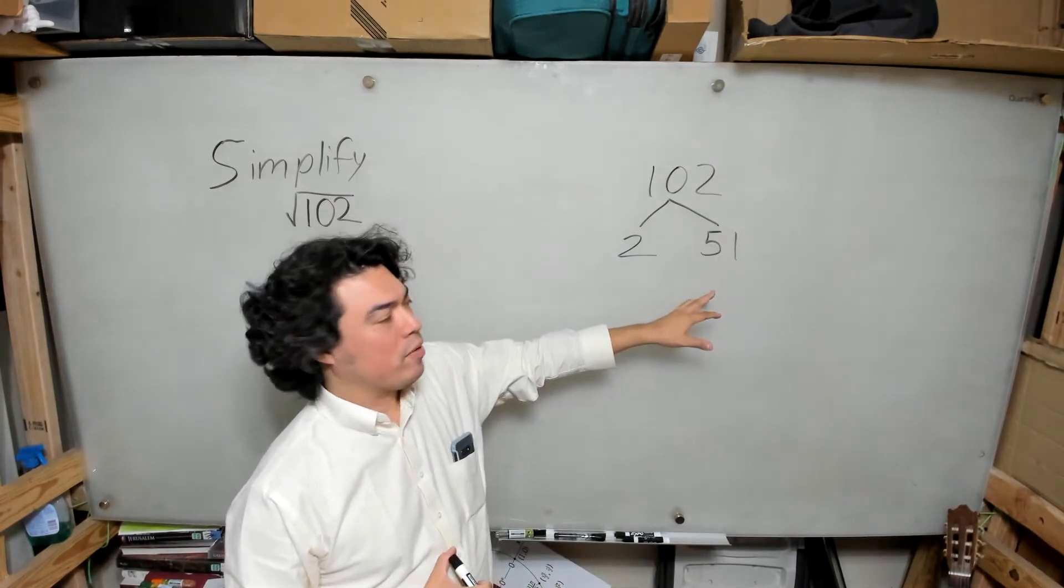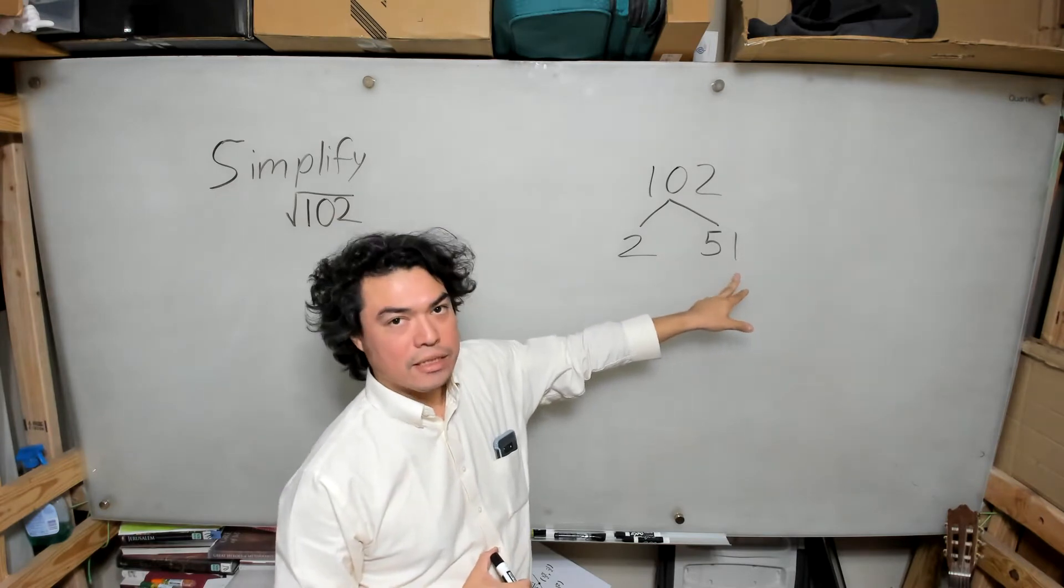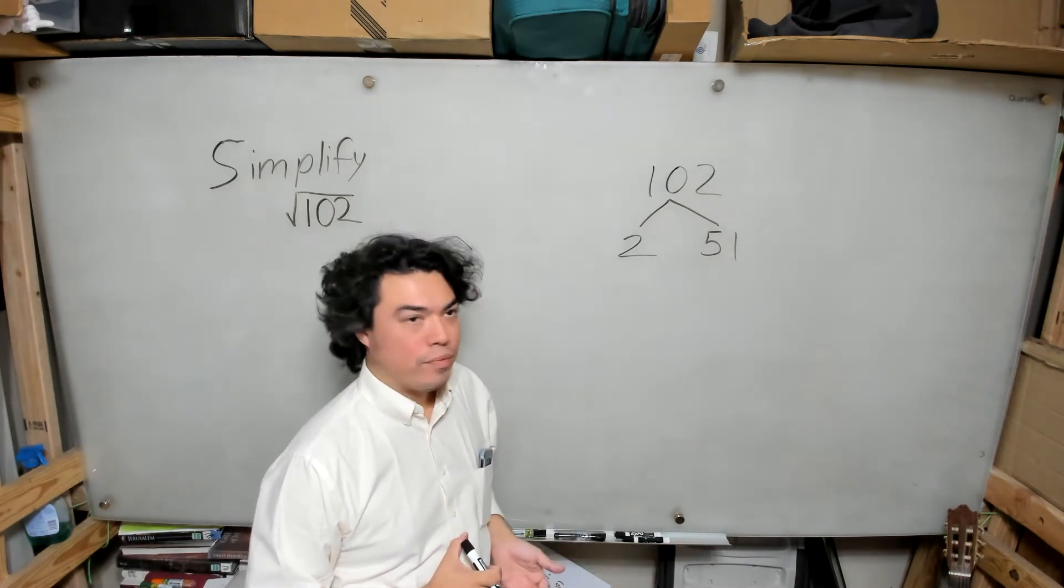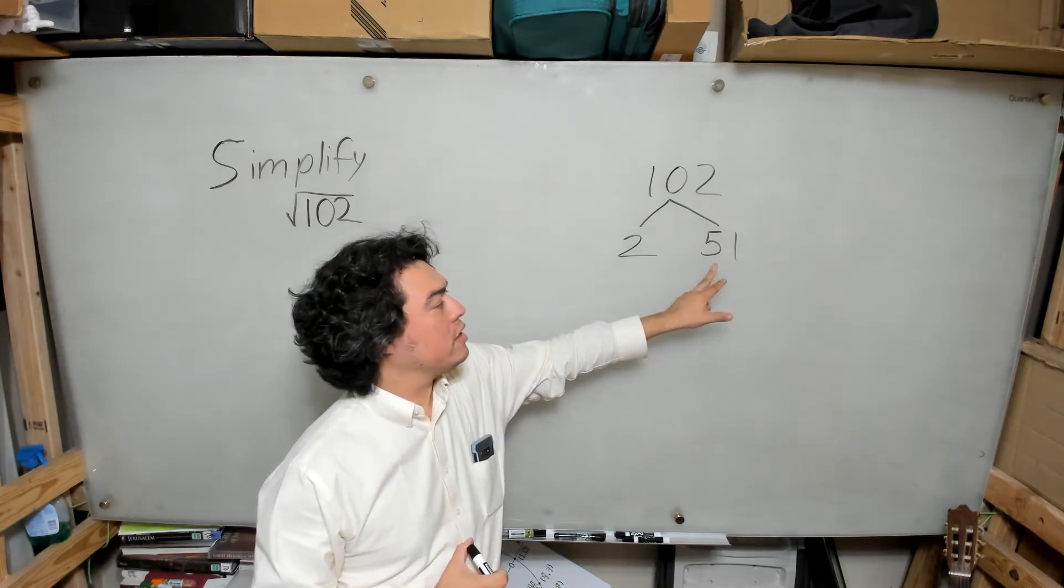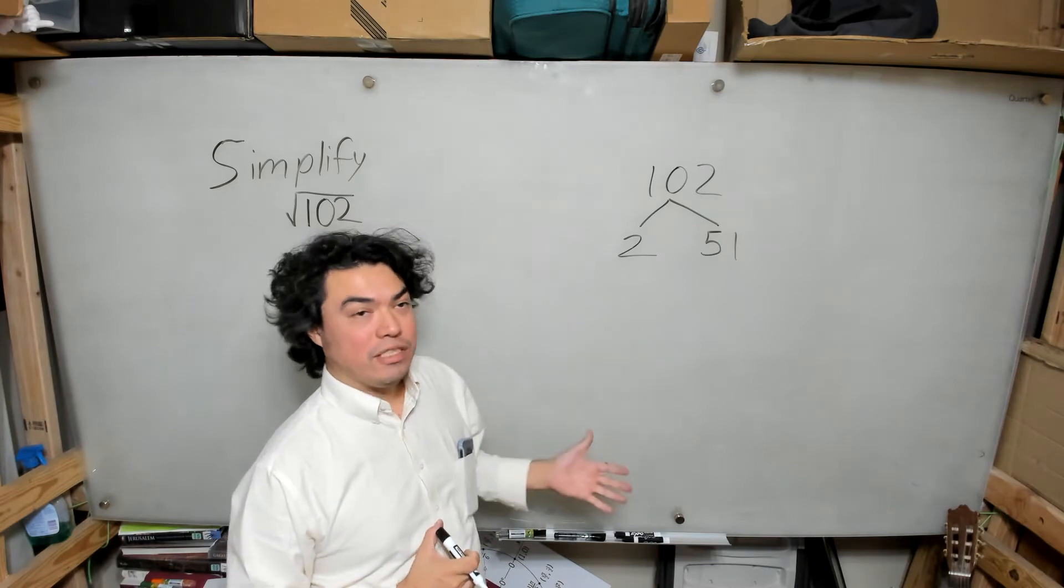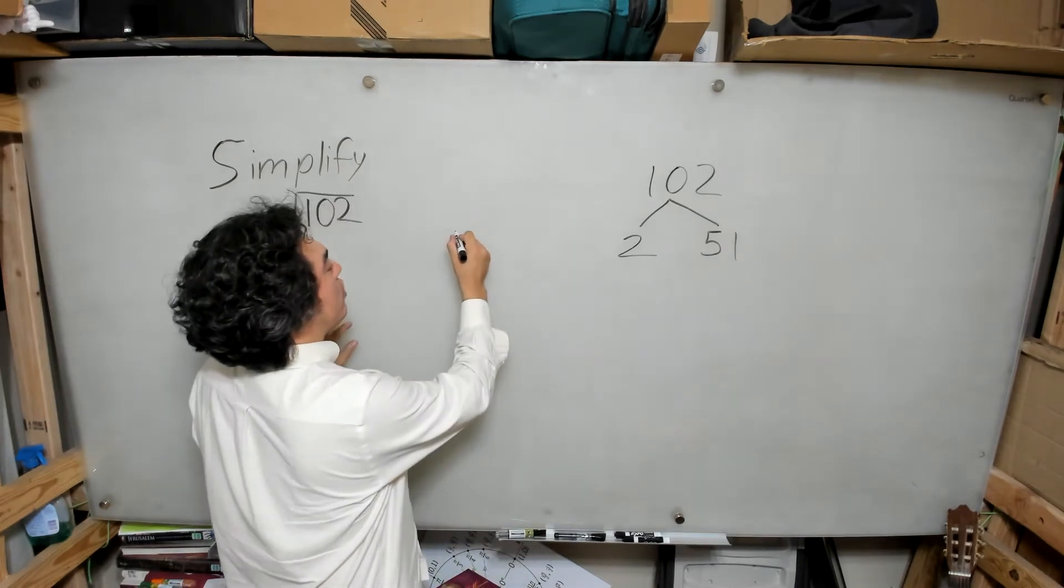In this case, 5 plus 1 is 6. 6 is divisible by 3 because 6 divided by 3 is 2. So when the sum of the digits in a number is divisible by 3, then the number itself is divisible by 3.